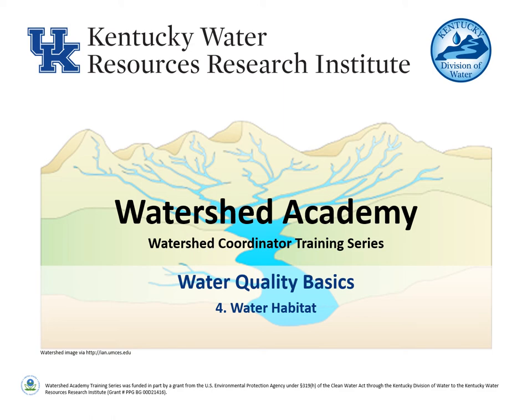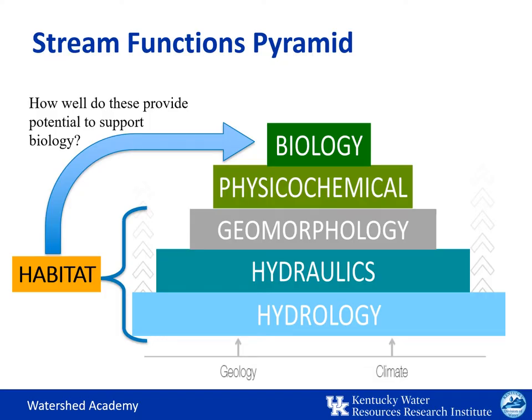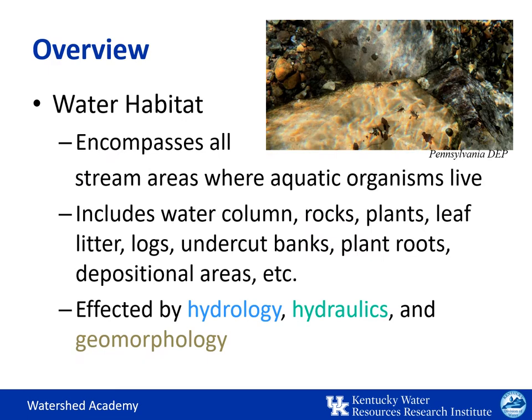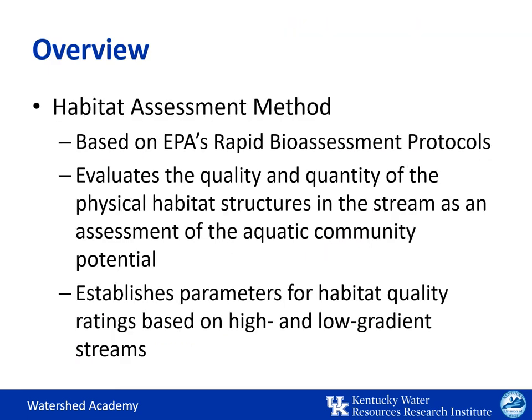Welcome to the Water Habitat presentation from Water Quality Basics. The first three levels of the Stream Function Pyramid create the habitat conditions available for aquatic life. We're going to walk through a habitat assessment method based on the U.S. Environmental Protection Agency's Rapid Bio Assessment Protocol. Through this, we'll evaluate the quality and quantity of physical habitat structures in the stream using established parameters for habitat quality ratings based on high and low gradient streams.